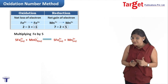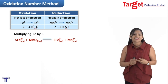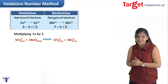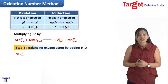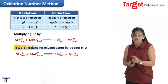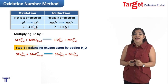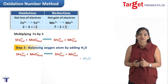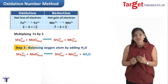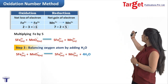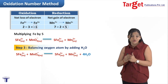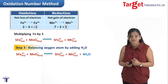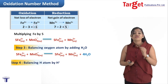Now all the atoms and charges are balanced. The last step is balancing oxygen and hydrogen. On the reactant side there are 4 oxygen atoms and none on the product side, so we add 4 water molecules to the product side. This introduces 8 hydrogen atoms on the product side, so we add 8 H⁺ ions to the reactant side to balance hydrogen.